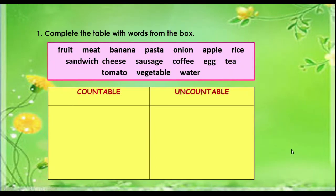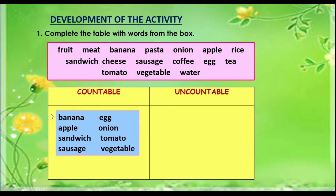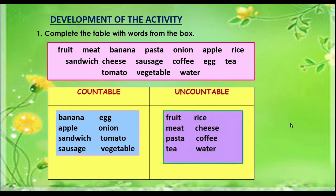Now we have some activities. The first one is: complete a table with words from the box. We have: fruit, meat, banana, pasta, onion, apple, rice, sandwich, cheese, sausage, coffee, egg, tea, tomato, vegetable, and water. Which one is countable and which one is uncountable? Countable: banana, apple, sandwich, sausage, egg, onion, tomato, and vegetable. Uncountable: fruit, meat, pasta, tea, rice, cheese, coffee, and water.